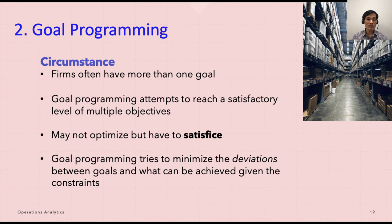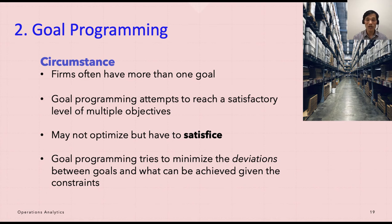The second topic of this lecture is goal programming. In today's business environment, profit maximization or cost minimization is not always the only objective that a firm sets forth. Often, maximizing total profit is just one of several goals, including such contradictory objectives as maximizing market share, maintaining full employment, providing quality ecological management, minimizing noise level in the neighborhood, and meeting numerous other non-economic goals.